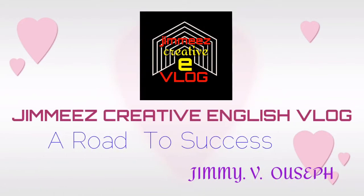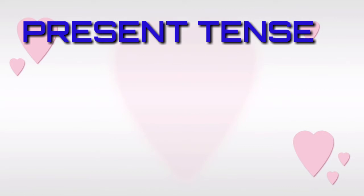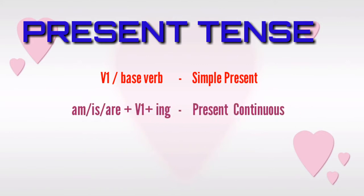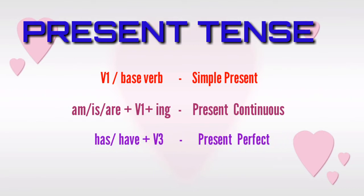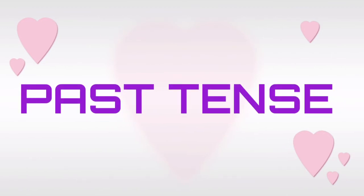Hi everybody, welcome back. We have discussed the structure of present tense earlier. We learned that actions or situations in the present point of time is called present tense. V1 or base verb denotes simple present tense. Am, is, are plus V1 plus -ing denotes present continuous tense. Has or have plus V3 denotes present perfect tense. Has or have plus been plus V1 plus -ing denotes present perfect continuous.